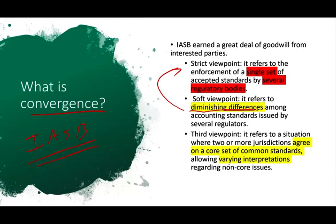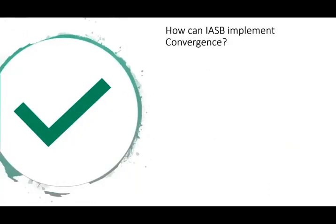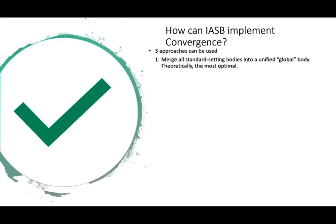The implementation of convergence is also important. How is the IASB implementing convergence? They have three approaches. The first approach is to merge all standard-setting bodies into a unified global body — theoretically this is the most optimal. Basically you have one accounting body and no national bodies. That doesn't exist yet, but that's the theory. This goes hand in hand with the strict viewpoint, where you only have one set of accepted standards.